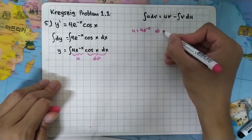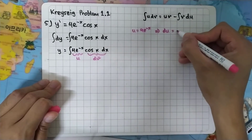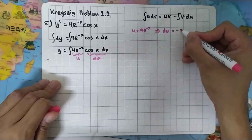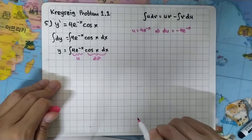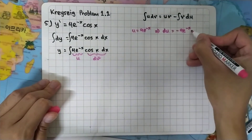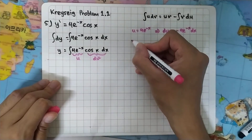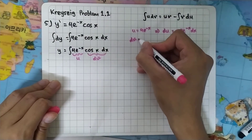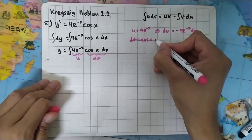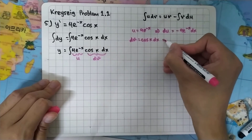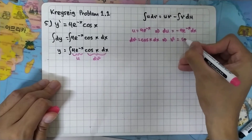So u is equal to 4 e to the minus x, and du is minus 4 e to the minus x dx. For dv we have cos x dx, and taking the antiderivative gives v equal to sine x.